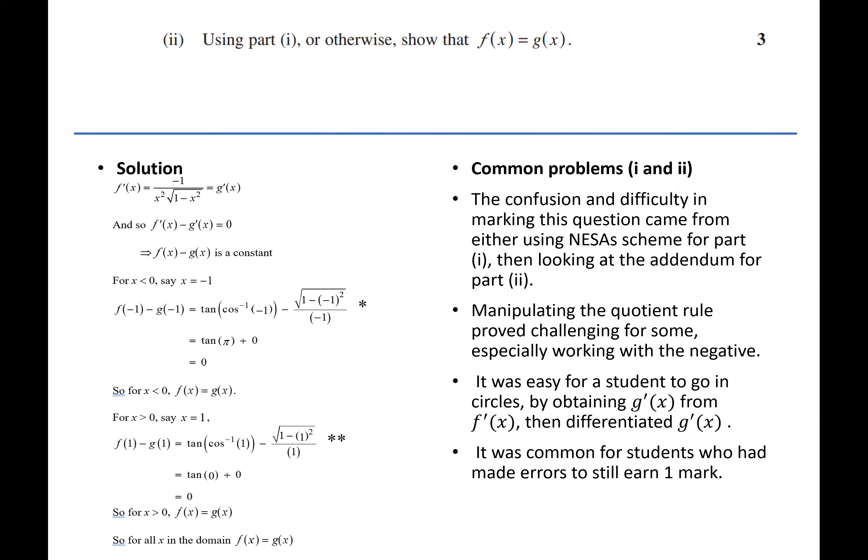The confusion and difficulty in marking this question came from either using NESA scheme for part i then looking at the addendum for part ii. Manipulation of the quotient rule proved challenging for some, especially working with the negative.